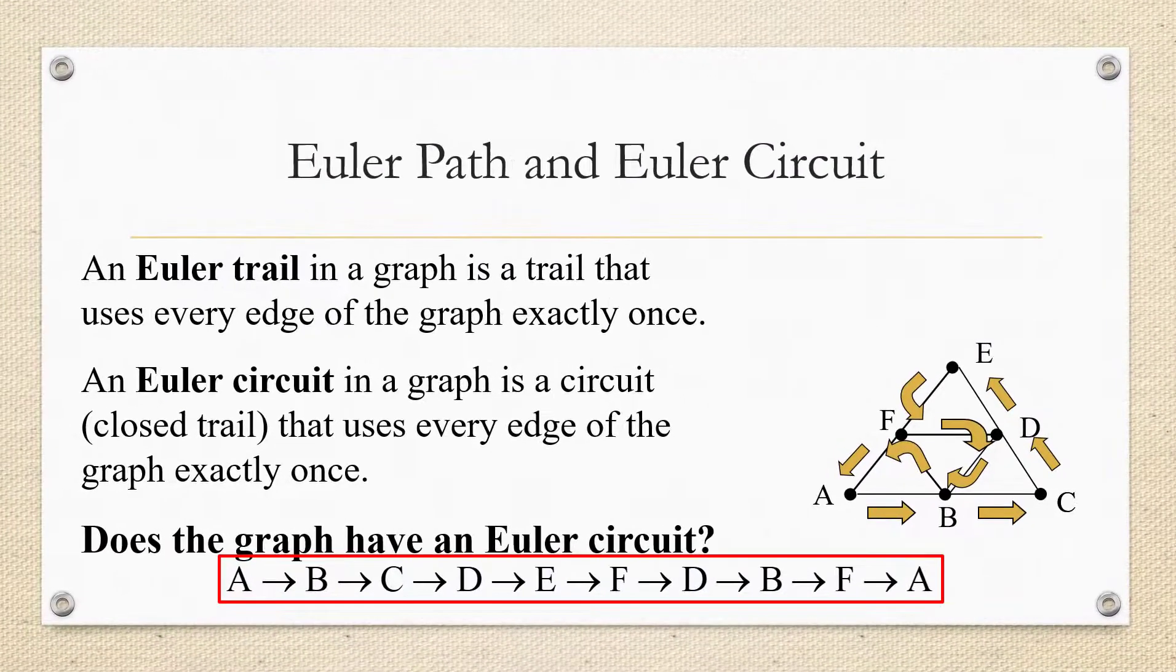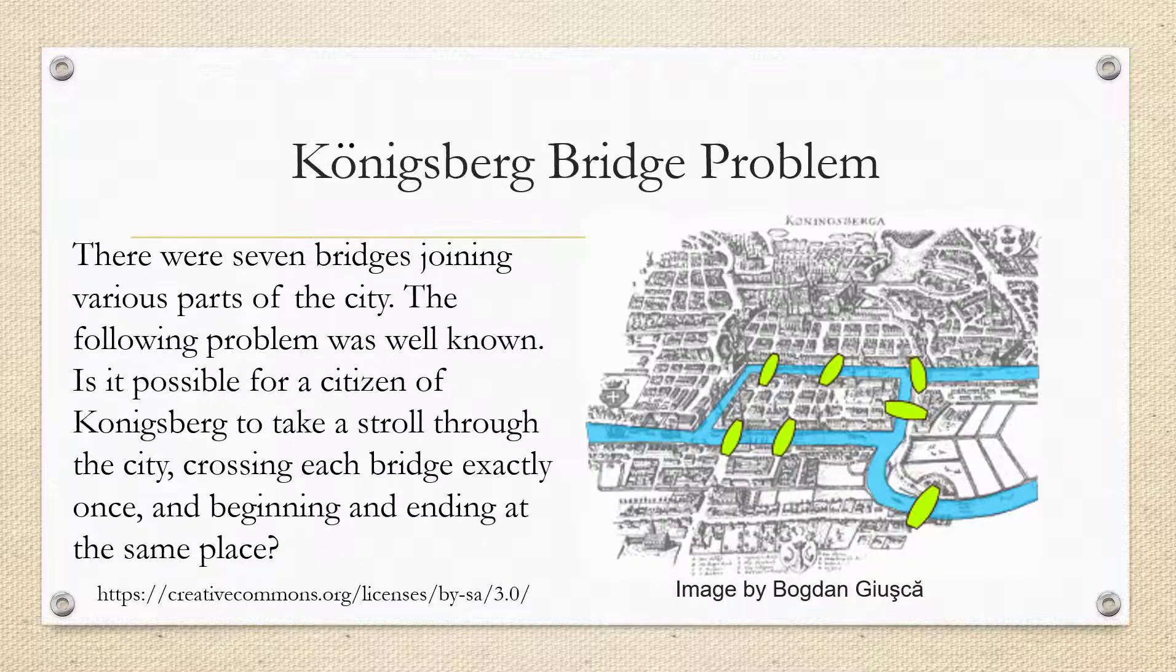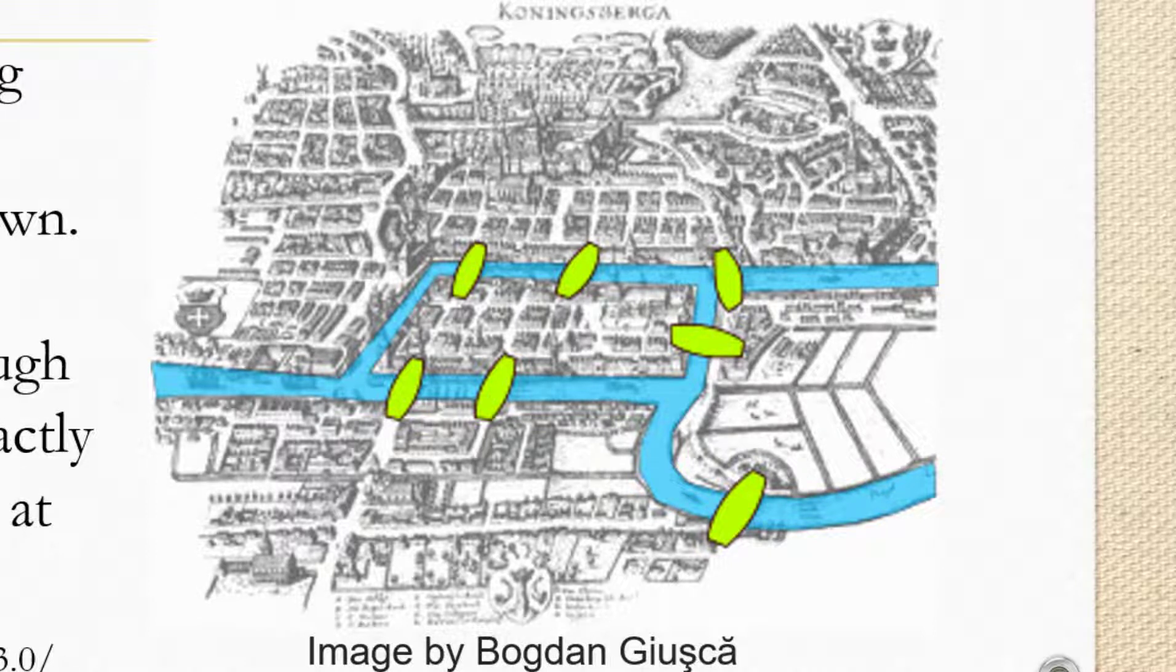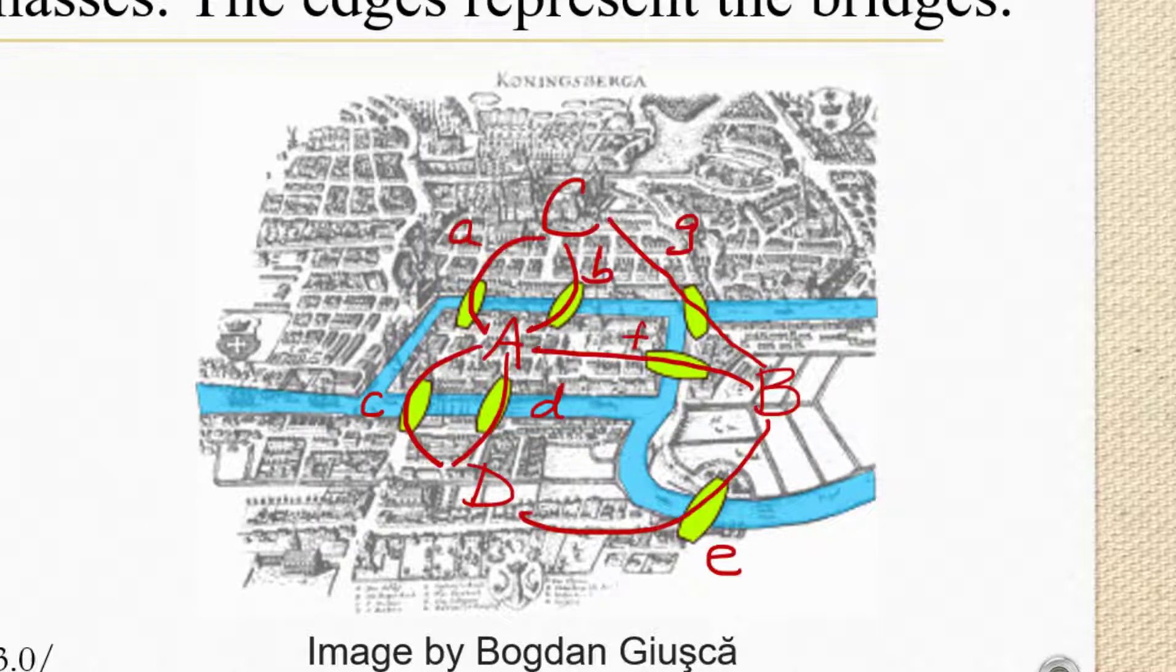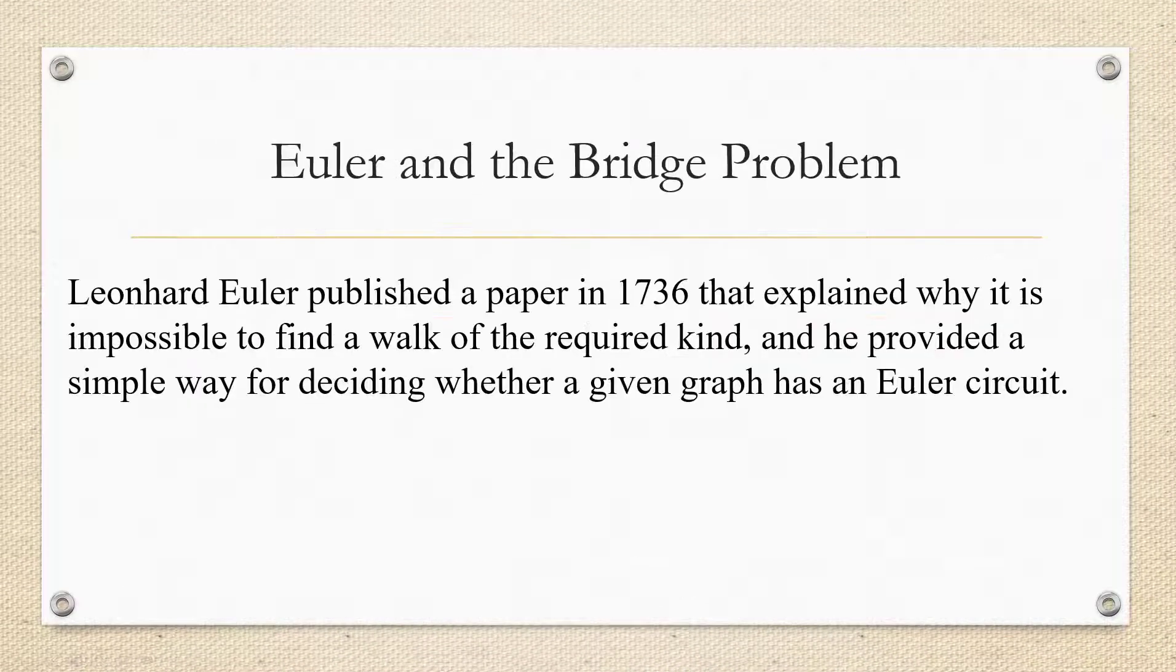So yes, this graph does have an Euler circuit. It begins and ends at A, and it visits every single edge exactly once, no repetition. There is a famous math problem called the Konigsberg bridge problem. In the city of Konigsberg, there were seven bridges joining various parts of the city, and the problem was, is it possible for a citizen of Konigsberg to take a stroll through the city, cross each bridge exactly once, beginning and ending at the same place? So if you think of the bridges as being the edges in a graph, to find an Euler circuit in this multigraph would be the same as finding the described path. A mathematician named Leonard Euler published a paper in 1736 that explained why it's actually impossible to find a walk that would satisfy the Konigsberg bridge problem.